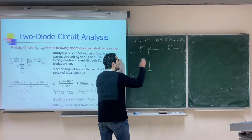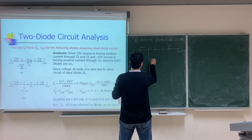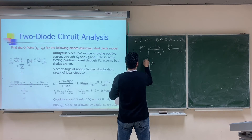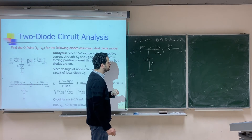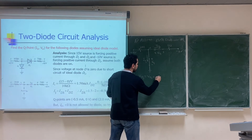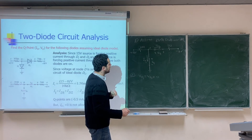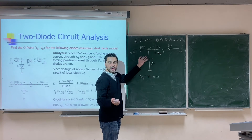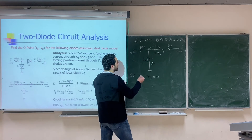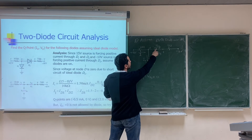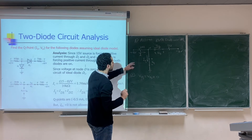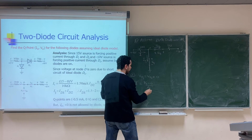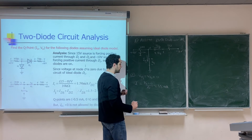Second step — Solve. We label V_D1, V_D2, I_D1, and I_D2. Since both diodes are assumed on (short circuits), V_D1 = 0 and V_D2 = 0. To find I_D1, we first calculate the current I through the 10kΩ: I = (15 − 0) / 10kΩ = 1.5 milliampere.